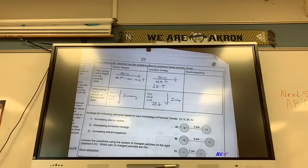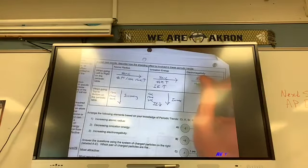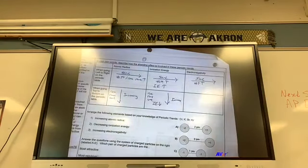Electronegativity is the what? Desire for an electron. Right? So it's going to be the exact opposite. Shielding is the same as I go across. My number of protons is going up as I go across. So my electronegativity is doing what as I go across? Increasing. As I'm going across, it's increasing.